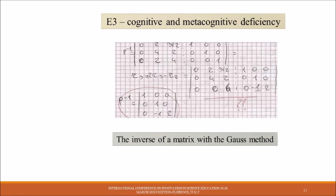In this type of error E3: cognitive and metacognitive deficiency. This kind of error can be caused by construction of conceptual nodes lacking from algorithms, the inverse of the matrix with the Gauss method.